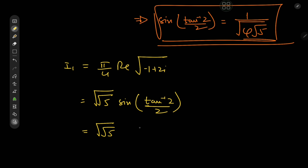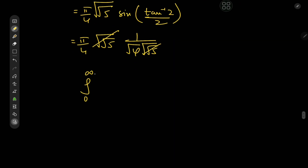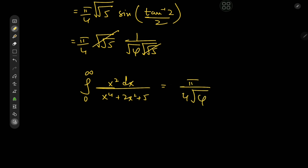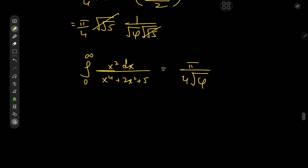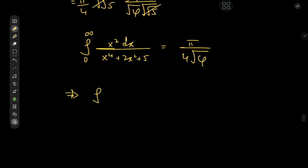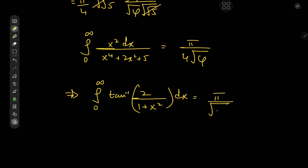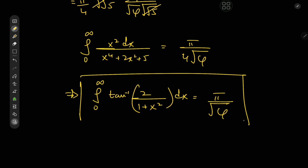Finally for integral I₁, we have 5^(1/4) × (1/5^(1/4)) × 5^(1/4) — with some lovely cancellation — times π/4, giving the integral from 0 to ∞ of x² dx / (x⁴ + 2x² + 5) = π/(4√φ). Our target integral was 4 times this, so the integral from 0 to ∞ of arctan(2)/(1 + x²) dx equals π divided by the square root of the golden ratio.